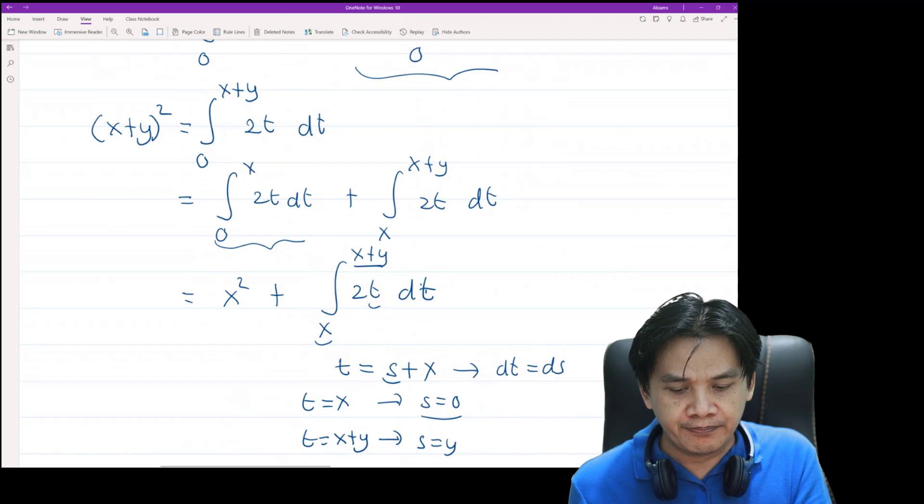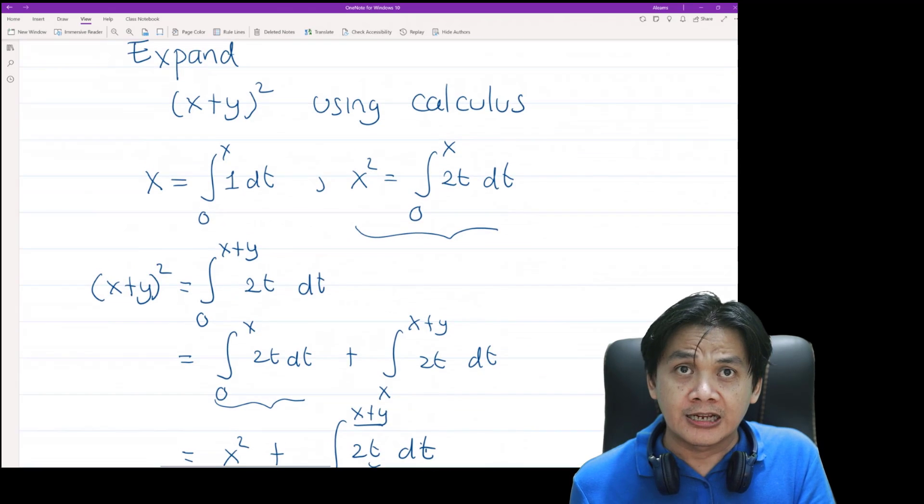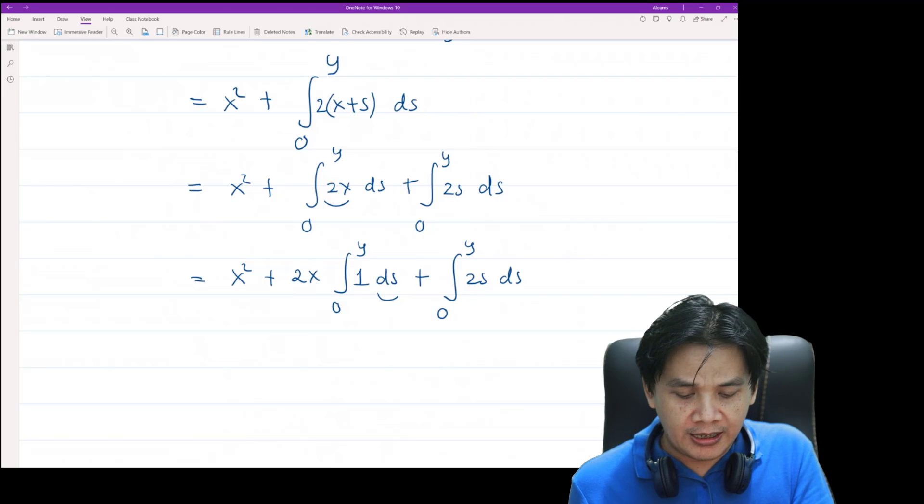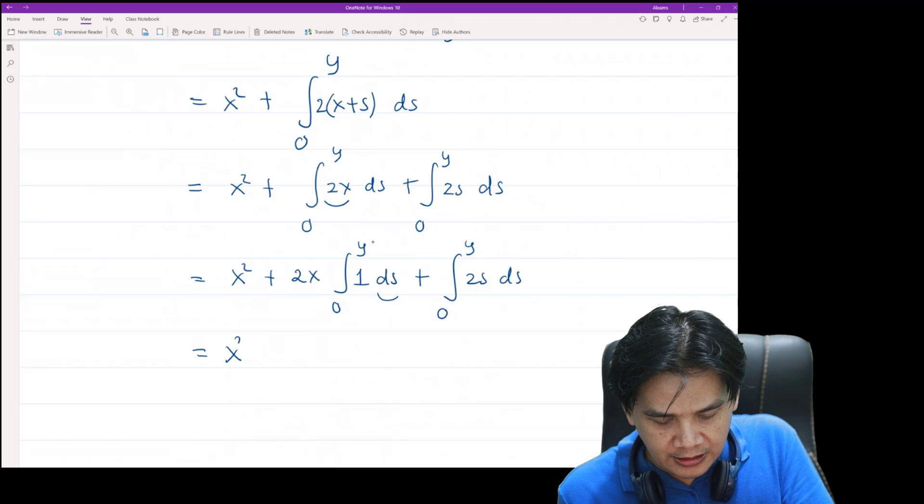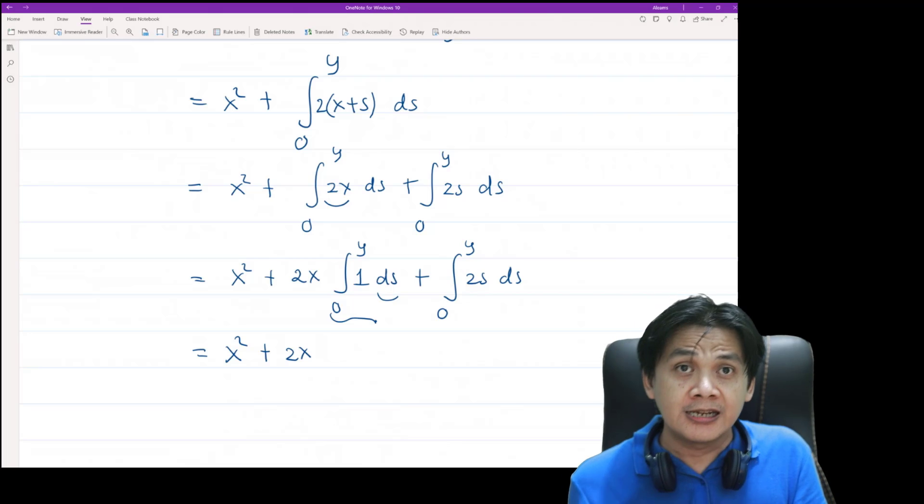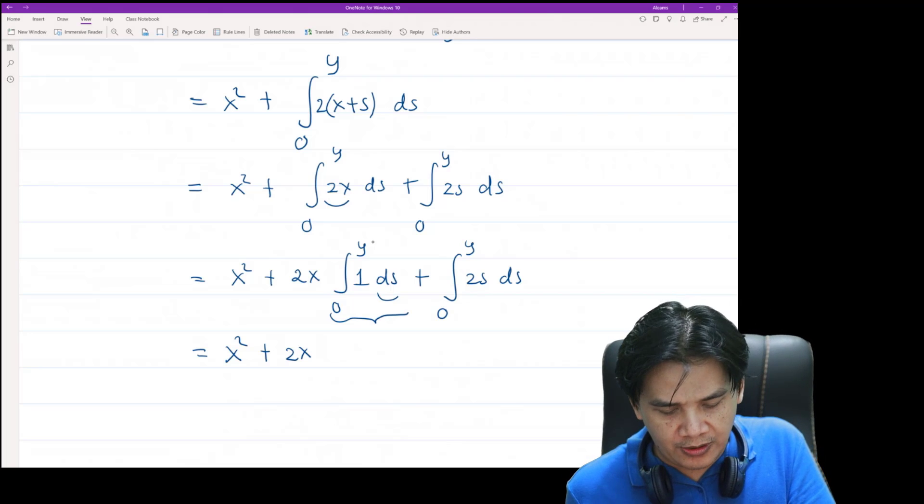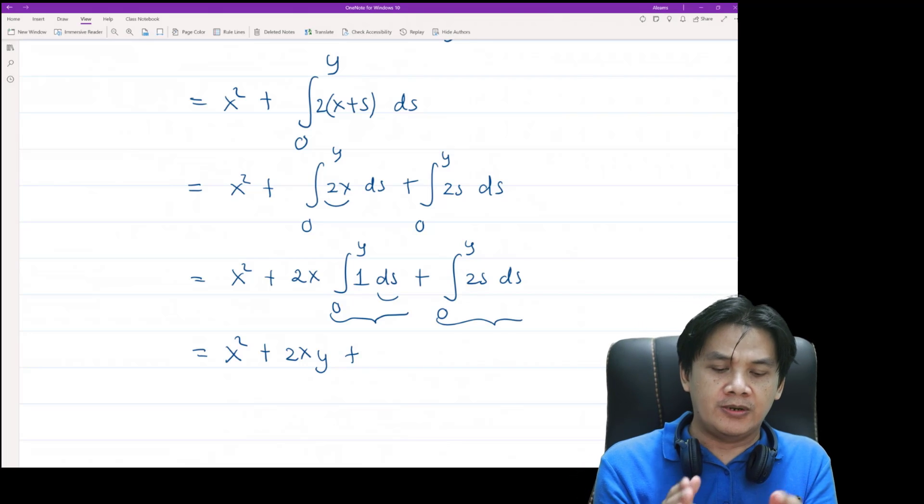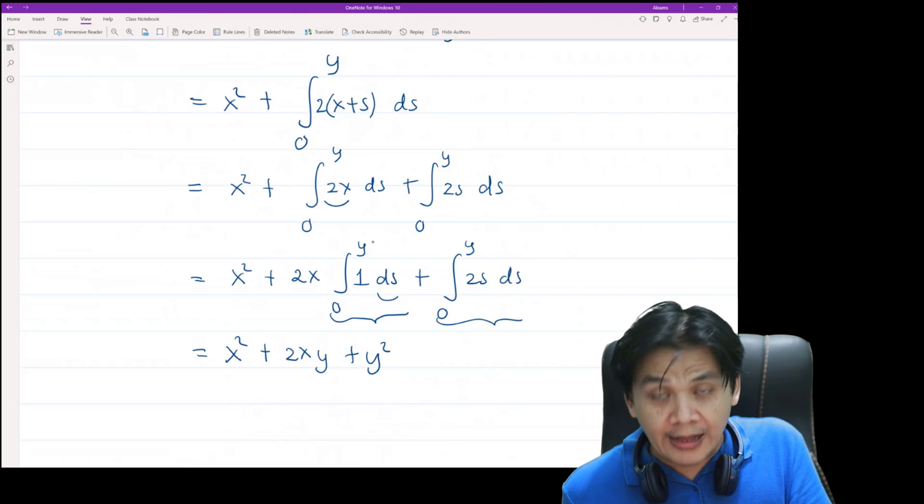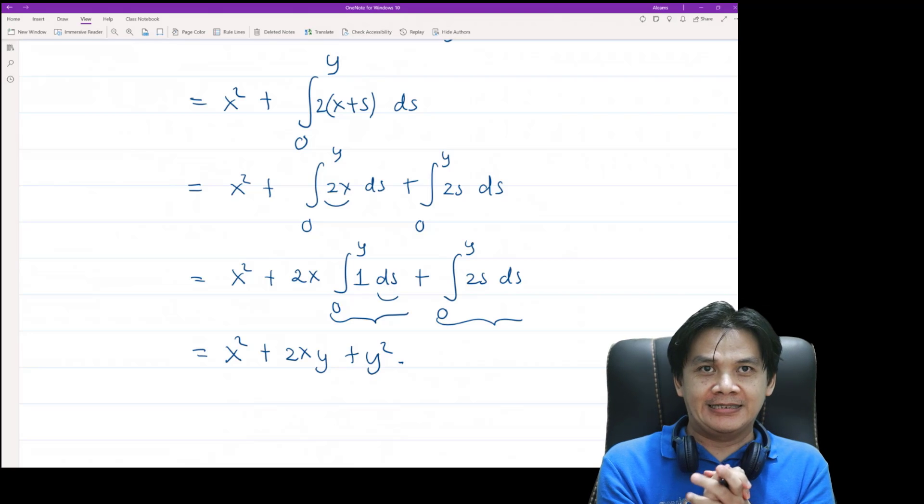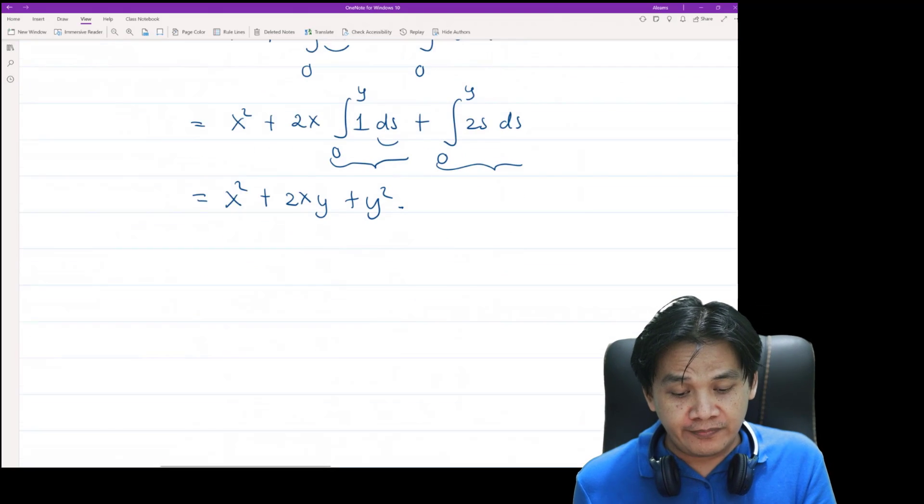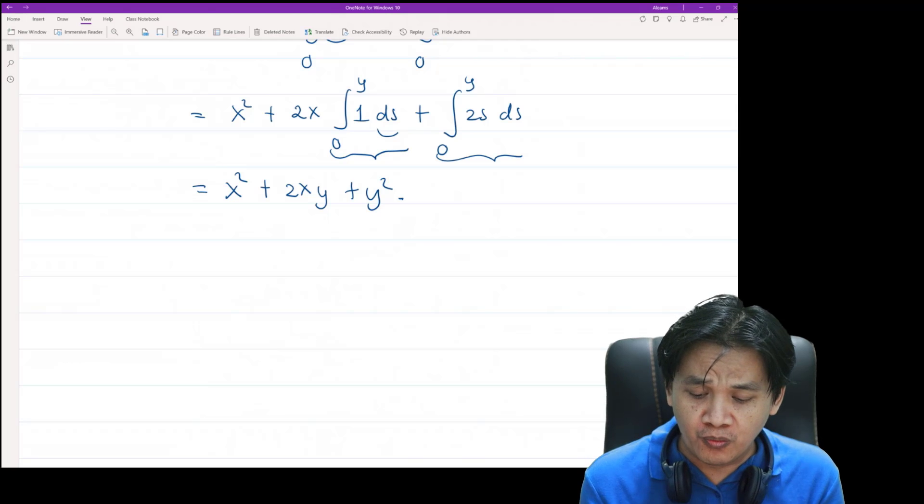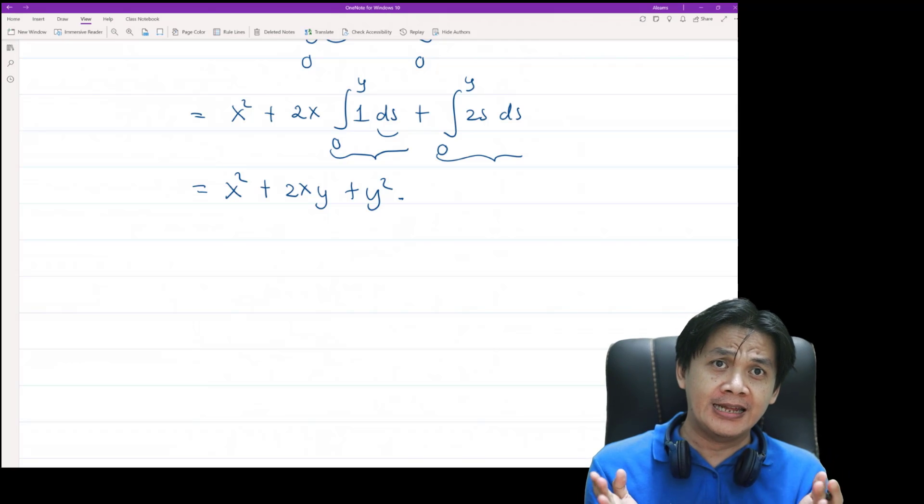So in this case, since the upper limit is y, then the first integral, which is this guy, is exactly y, so we have 2xy plus, and this guy is exactly y squared, and we are done.